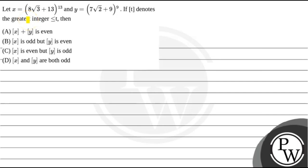In this question, it is given that x = (8√3 + 13)^13 and y = (7√2 + 9)^9. If [t] denotes the greatest integer function, we have to determine which option is correct. The key concept here is binomial expansion.